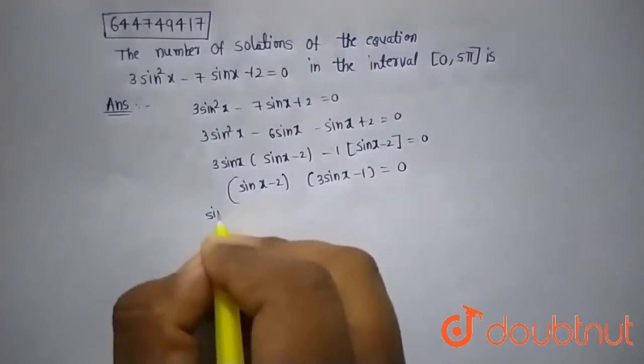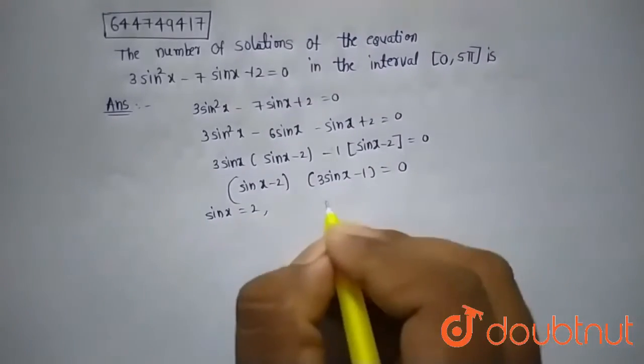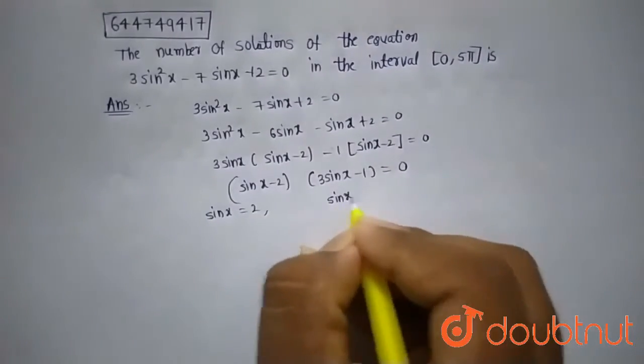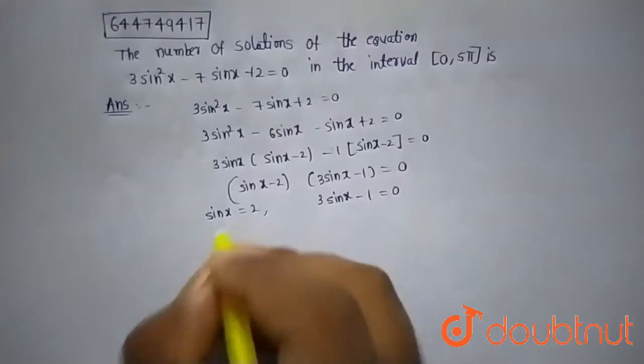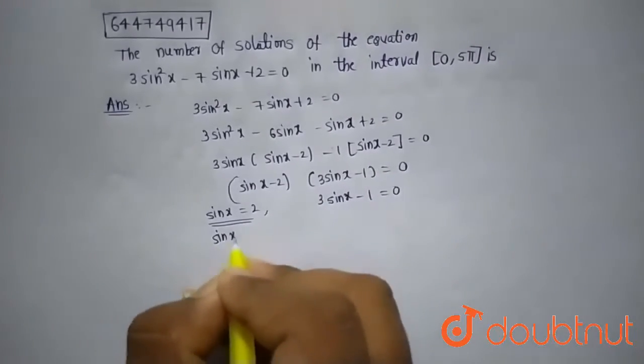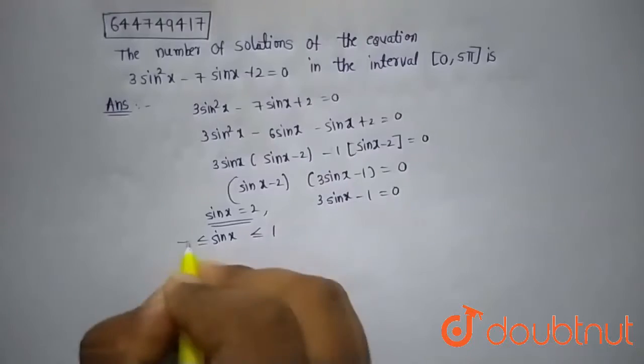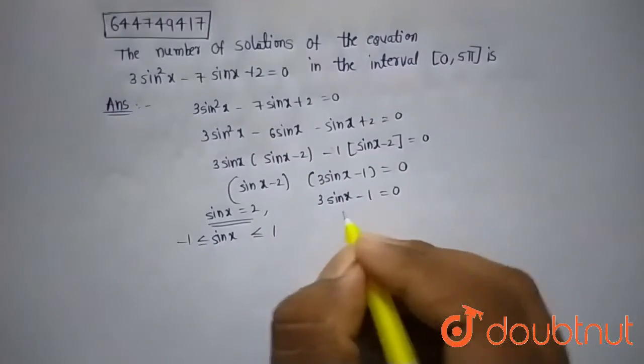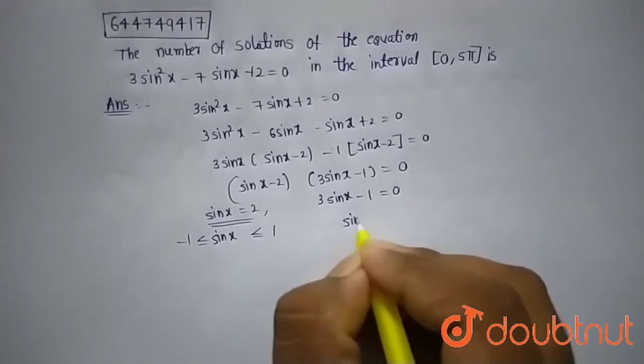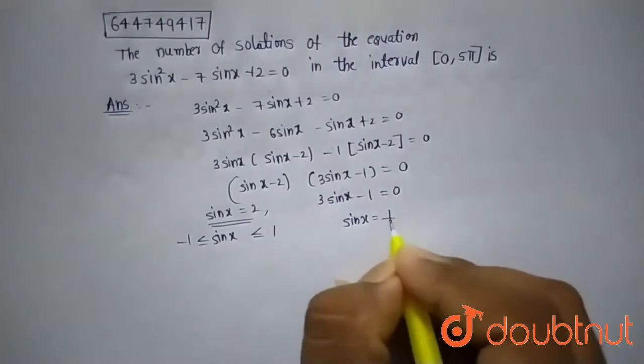Now there are two cases. One case is sin x = 2, and another case is 3sin x - 1 = 0. The first is not possible because sin x always lies between -1 and 1. So from 3sin x - 1 = 0, we get sin x = 1/3.